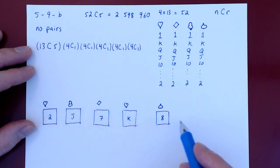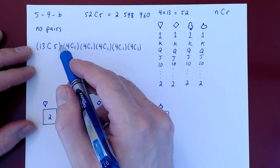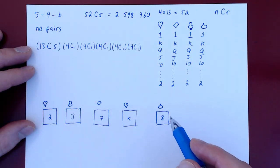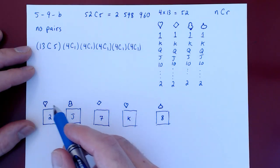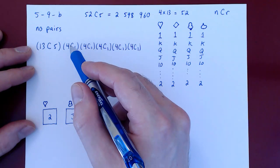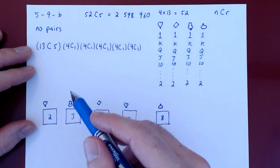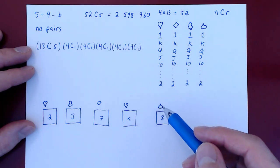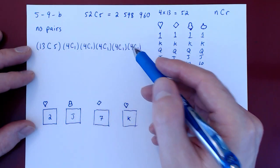And now we have counted all possibilities. We've first chosen the five different kinds for the cards. But then we have to choose which suit for each card. Four possibilities for the first suit, four for the second, four for the third, four for the fourth, and four for the fifth. We can now write this more concisely.